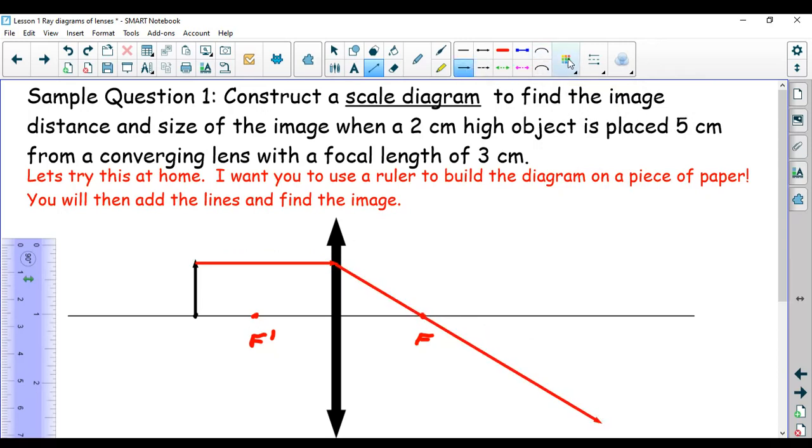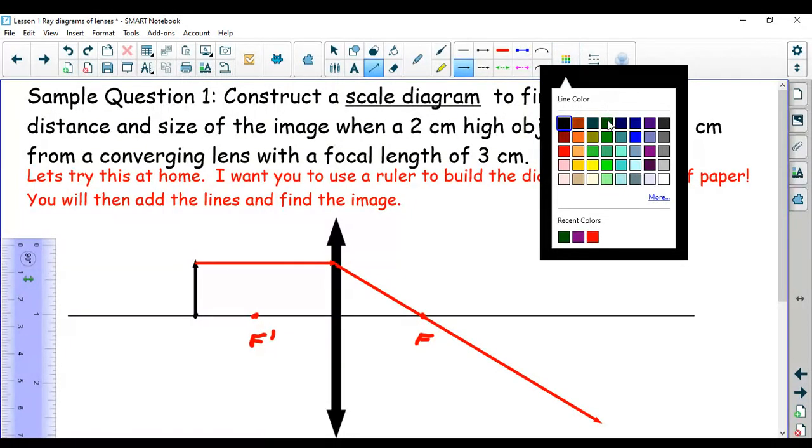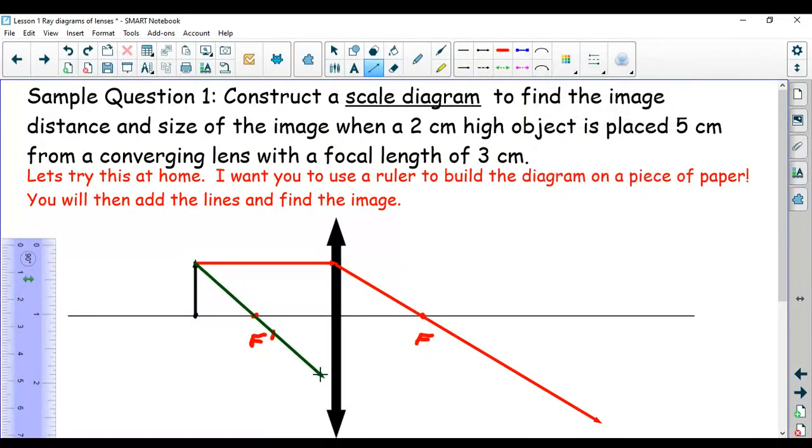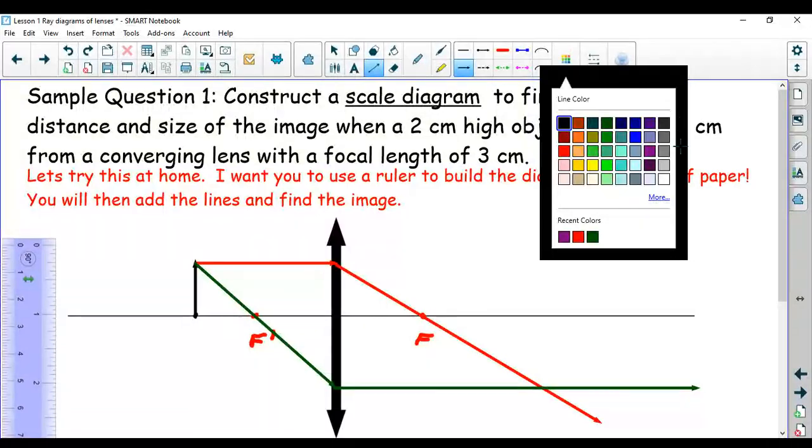Rule number two. Also no problem. I'm going to go through the top of the object, through the secondary focal point, and in the middle of my lens, I'm going to straighten her out.